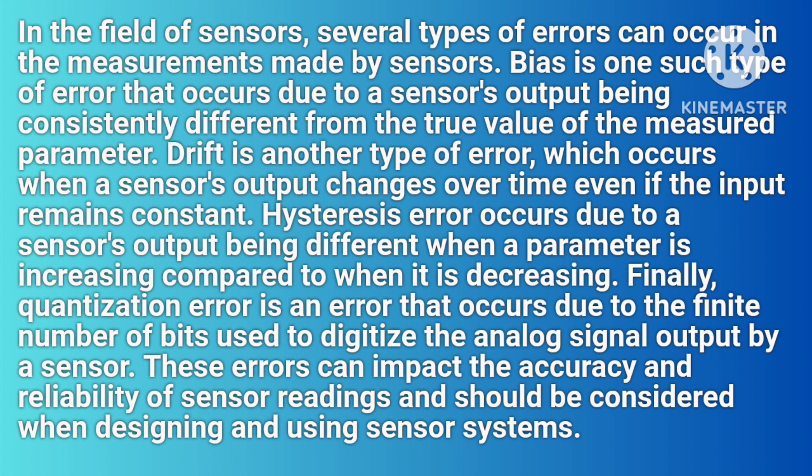In the field of sensors, several types of errors can occur in the measurements made by sensors. Bias is one such type of error that occurs due to a sensor's output being consistently different from the true value of the measured parameter. Drift is another type of error, which occurs when a sensor's output changes over time even if the input remains constant.